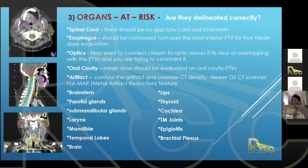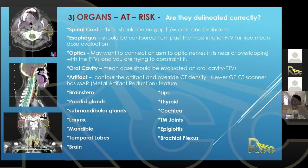Regarding esophagus, it should be contoured roughly around the target — generally about 1 cm past the most inferior PTV for a true mean dose evaluation. Sometimes the esophagus contour is drawn all the way down to the chest, and when you look at the mean dose it looks great, but that's because half of the esophagus is nowhere near the field. As a planner, optimize and evaluate on an esophagus contoured just around the target.